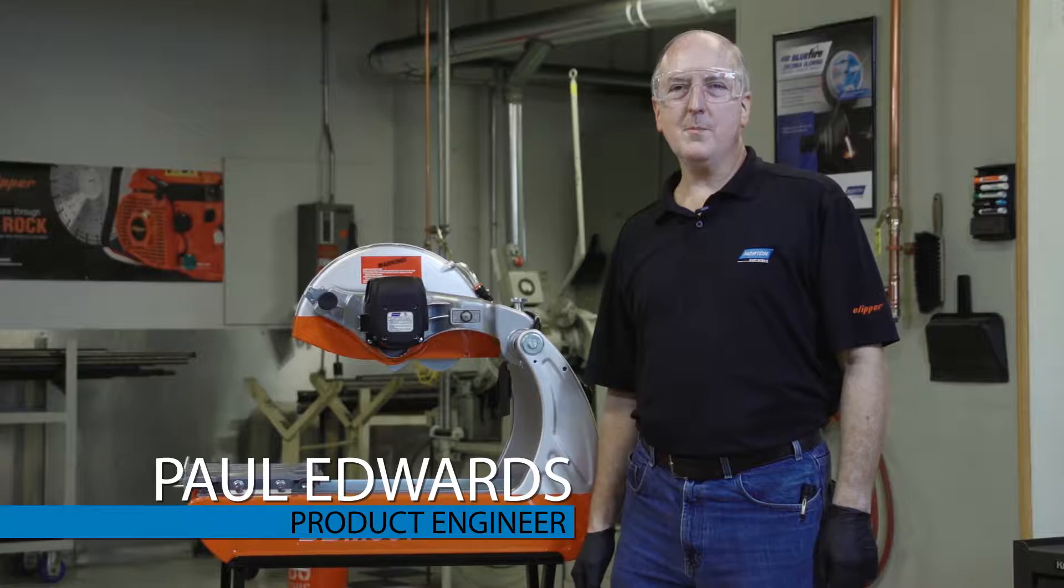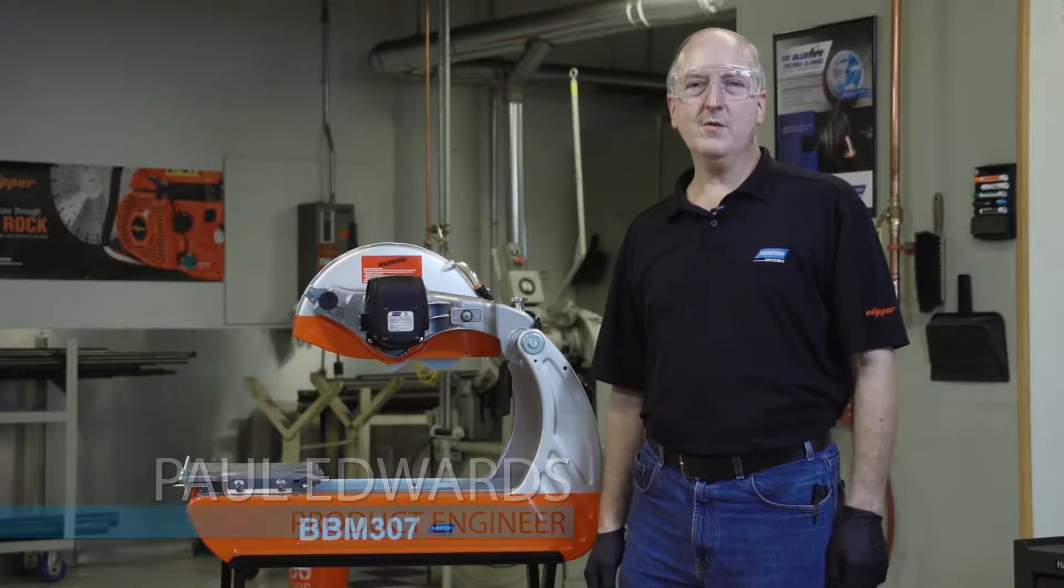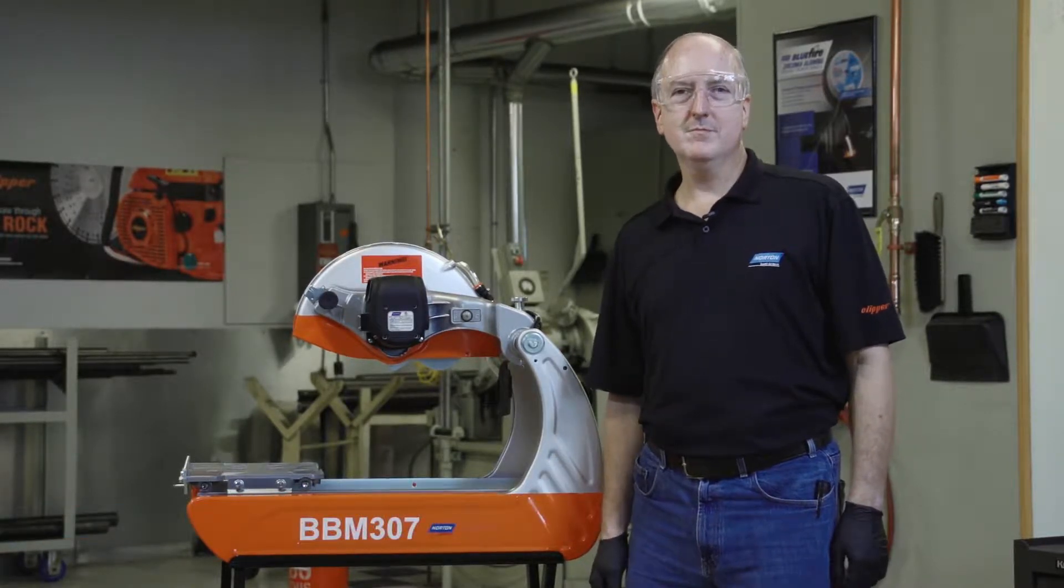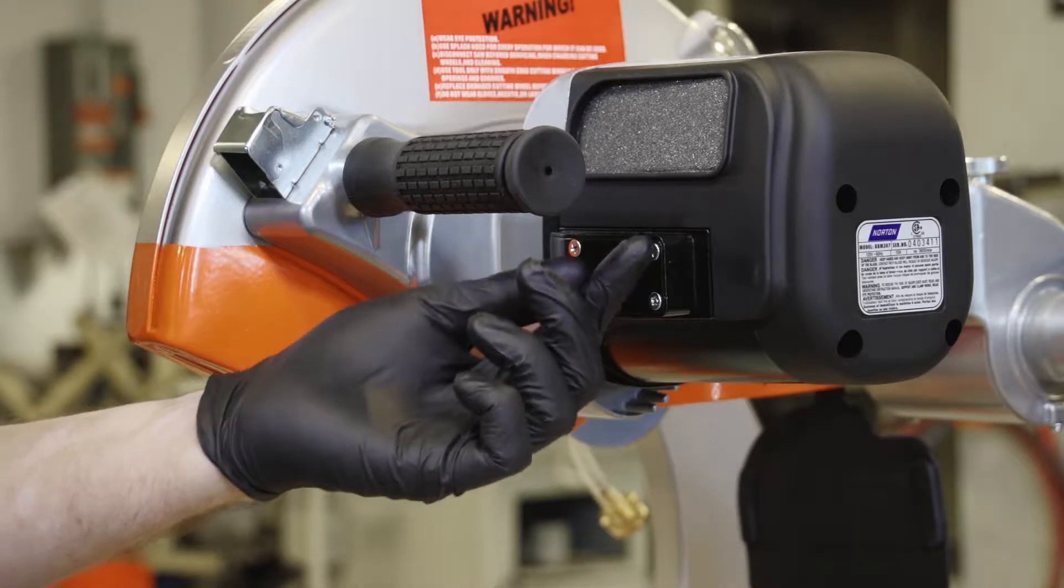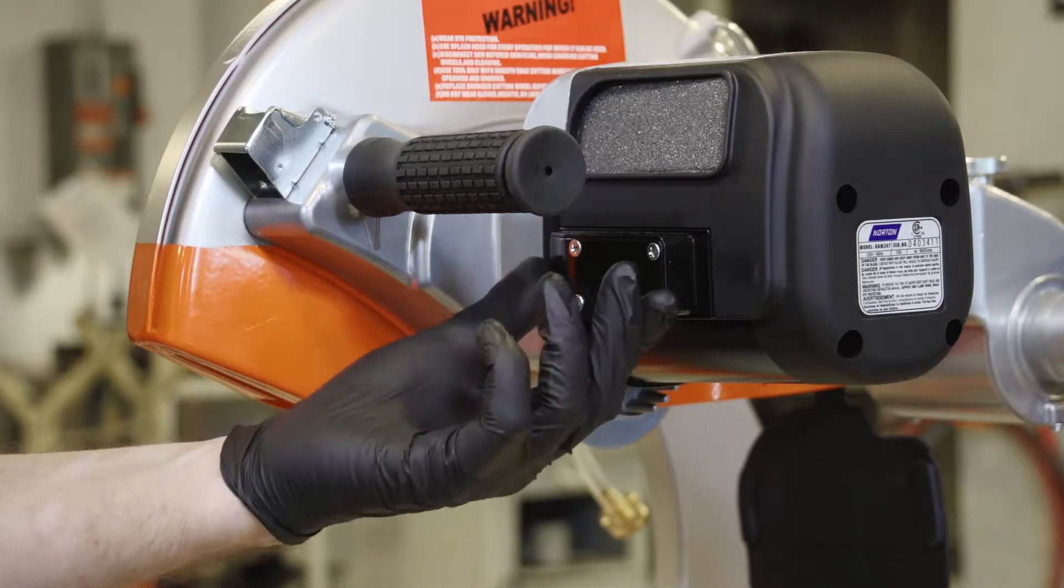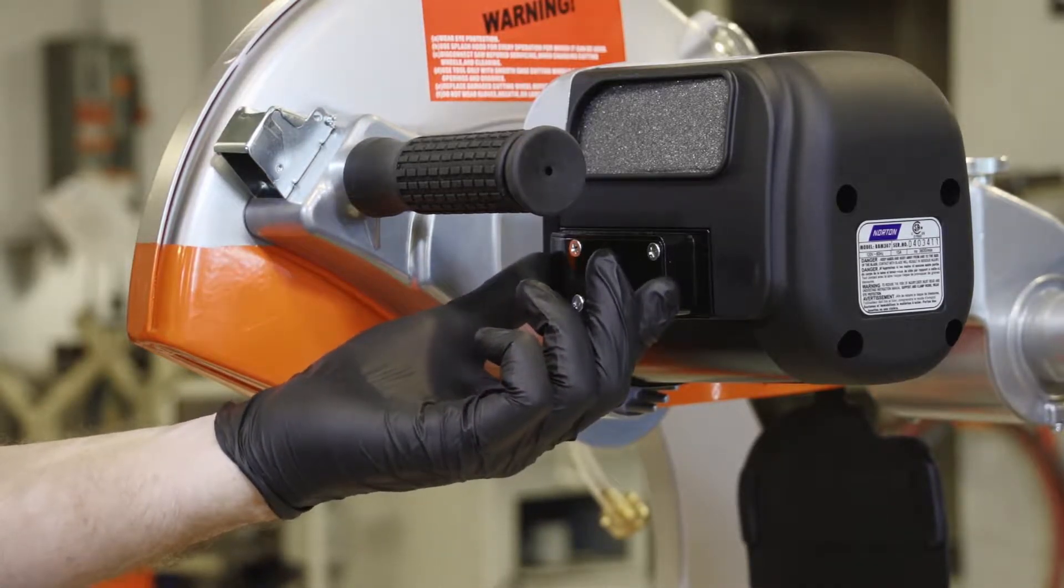Hi, I'm Paul Edwards with Norton Clipper and today we're going to replace the motor on a BBM 307. We will first remove the four screws that retain the wiring connector cover.